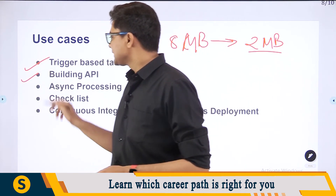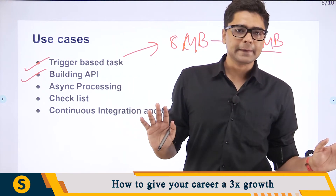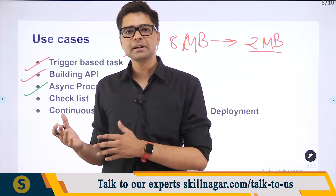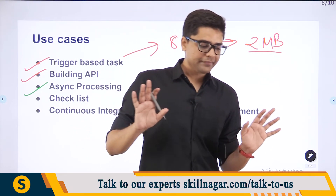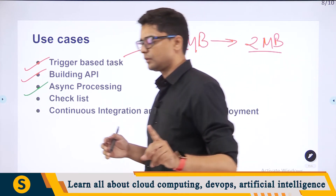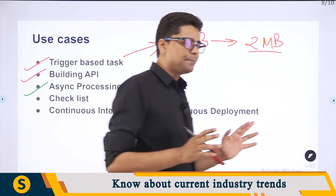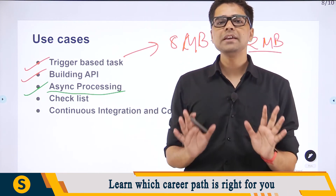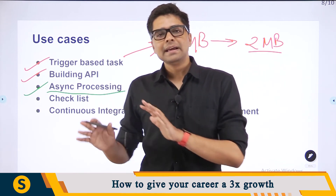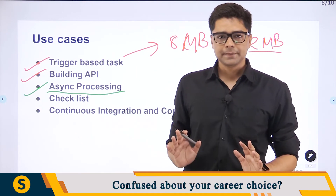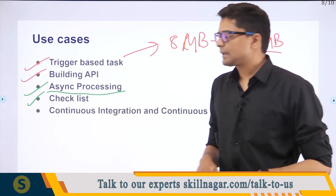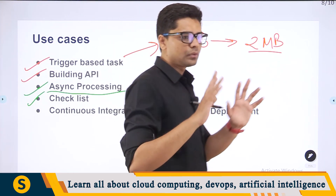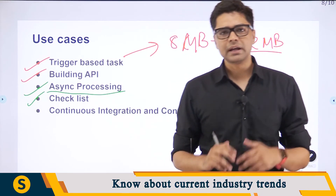Second is building APIs — you don't need any dedicated infrastructure; you simply implement the APIs and start working. Third is async processing — for example, when you make a payment and processing is still ongoing, or when a YouTuber uploads a video and processing happens in the background. Using serverless async processing, you don't stop the user from doing their current work; the processing happens in the background while the user continues using the application. Fourth is creating security checklists — you can put security protocol checks into serverless functions and implement them, which is something we've done for our clients.